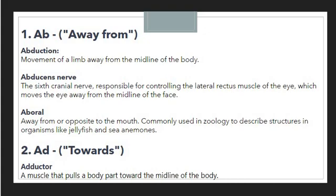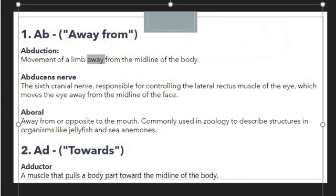The first example is abduction. Abduction means movement of a limb away from the midline of the body. Whenever you are denoting the movement of a limb away from the midline of the body, we use the prefix 'ab'. Abduction starts with the prefix 'ab', denoting the sense of away movement.